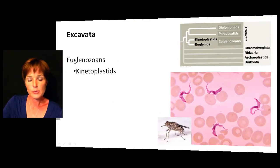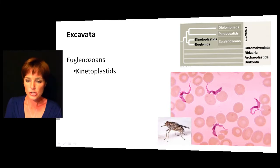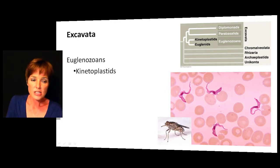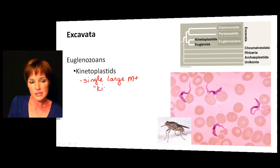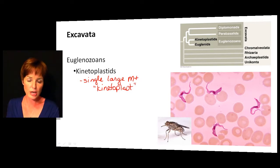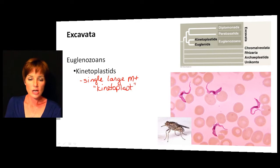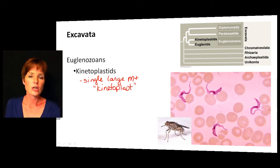Within the euglenozoans, the first group is the kinetoplastids, which are most known for causing African sleeping sickness. They can certainly be parasites. These are going to have a single large mitochondria with an organized DNA mass called a kinetoplast. They are mostly predatory and parasitic. African sleeping sickness is carried by the tsetse fly, as shown on this slide, and the shape of these organisms is a long slender form.